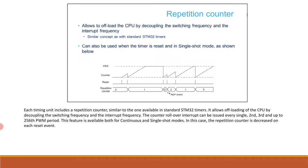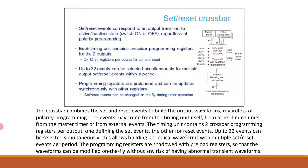The set/reset crossbar combines set and reset events to build the output waveforms regardless of polarity programming. Events may come from the timing unit itself, other timing units, the master timer, or external events. The timing unit contains two crossbar programming registers per output — one defining set events and one for reset events. Up to 32 events can be selected simultaneously, allowing periodic waveforms with multiple set or reset events per period. The programming registers are shadowed with preload registers so the waveform can be modified on the fly without any risk of abnormal transient waveforms.